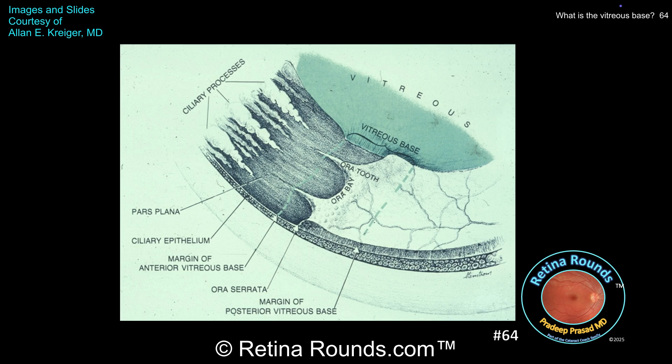The scalloped areas between the dentate processes are called ora bays. The vitreous base straddles the ora serrata, extends approximately 2 millimeters anterior and posterior to the ora serrata, and its location is shown in this diagram between the light green dashed lines.